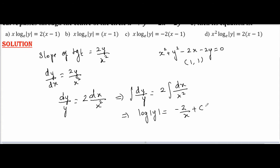It passes through the point (1,1), so when you substitute in the equation you get log 1 equals minus 2 plus c. We know that log 1 is 0, therefore c equals 2.